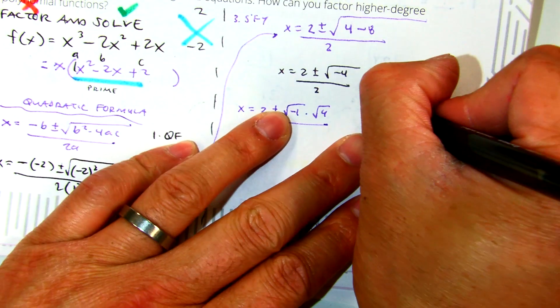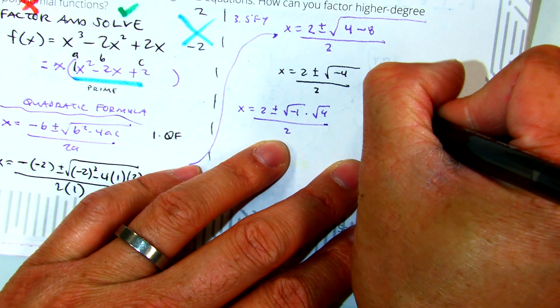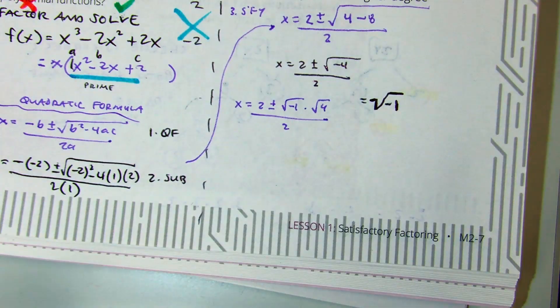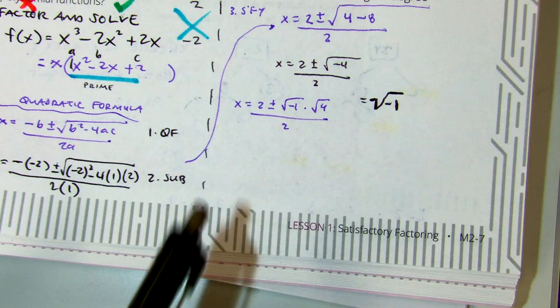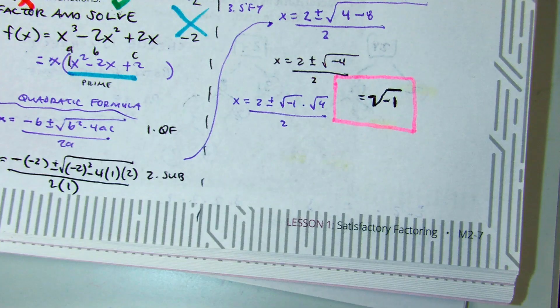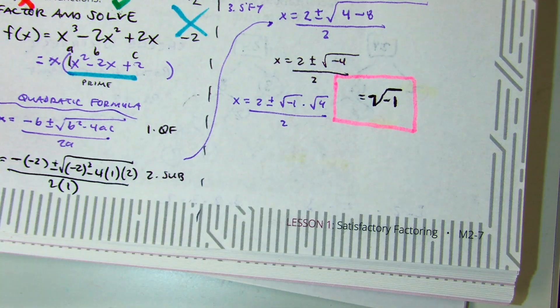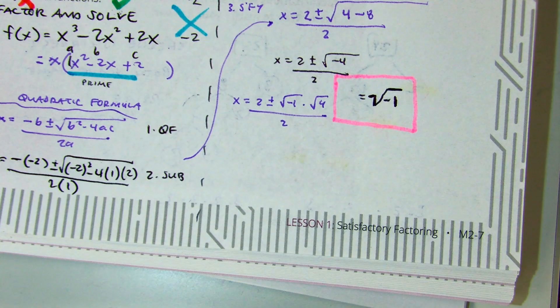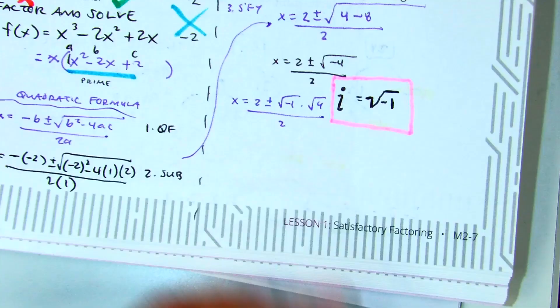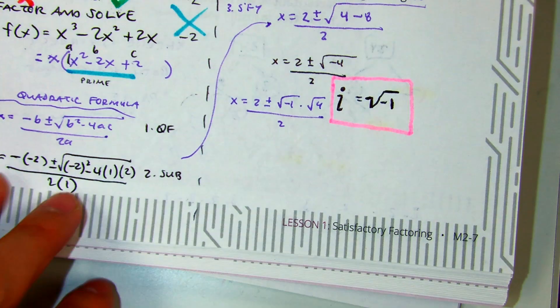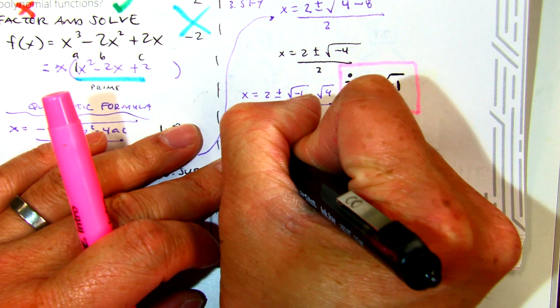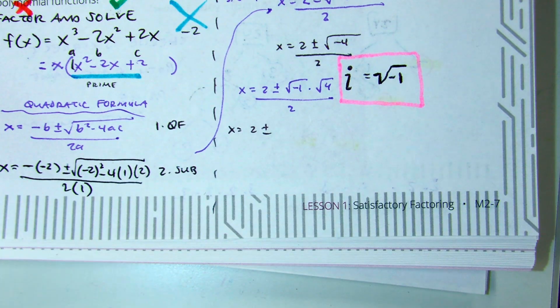Partner A, tell partner B, what do we know about the square root of negative 1? Does anyone know what it is? It's a letter of the alphabet. What does a pirate say? I. Arr!